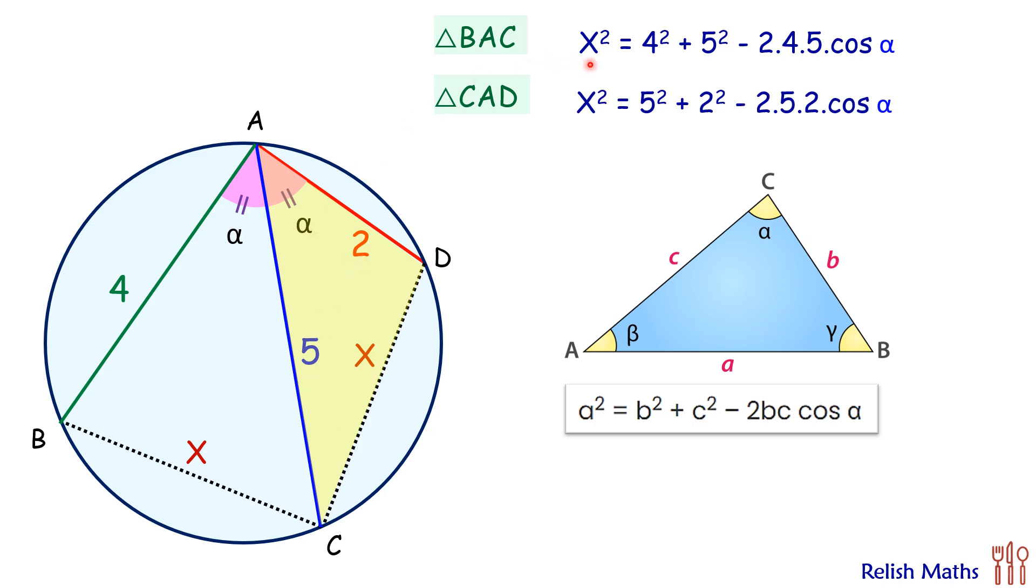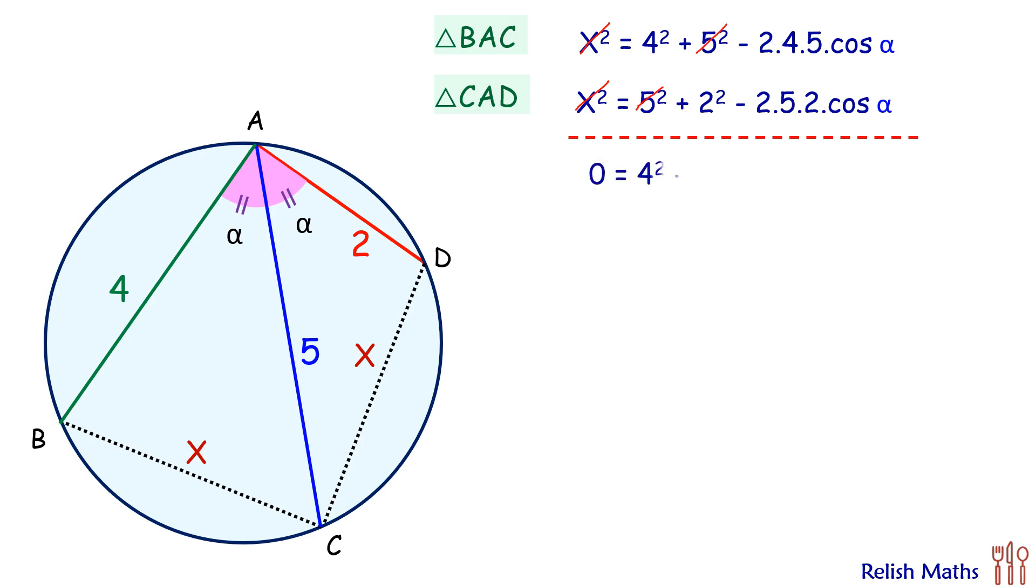Here we have got two variables, x and cos α, and two equations, so we'll solve them to get x and cos α. Let's first find cos α. For that we'll subtract the equations. On subtracting, x² will get cancelled on both sides, 5² will also get cancelled. The result we'll get is 0 = 4² - 2² minus, when we solve this, 20 cos α. Solving it, we'll get 20 cos α = 12.